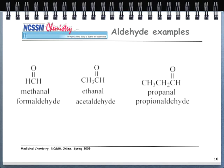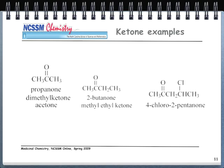Aldehyde names: the first one has one carbon — methane, take the '-e' off, add '-al' — methanal, most commonly called formaldehyde. Ethanal you've already seen — this is acetic aldehyde. The third one has three carbons — propane, take the '-e' off, add '-al' — propanal, also known by the common name propionaldehyde.